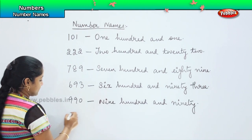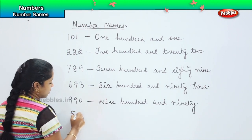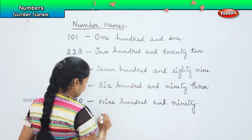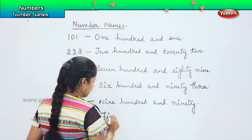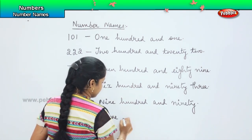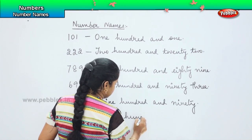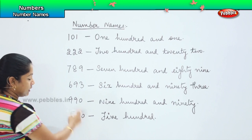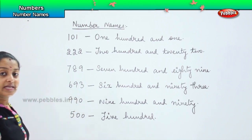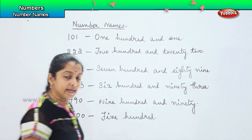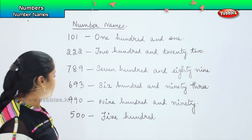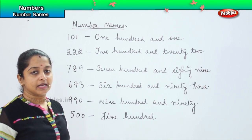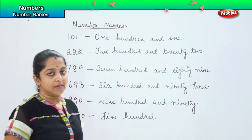If I give five hundred, how will you write it? Five hundred. Will you write something else beyond this? No, because the tens and the ones place is given as zero. So you don't have any number to express. This is how we will be writing our number names.